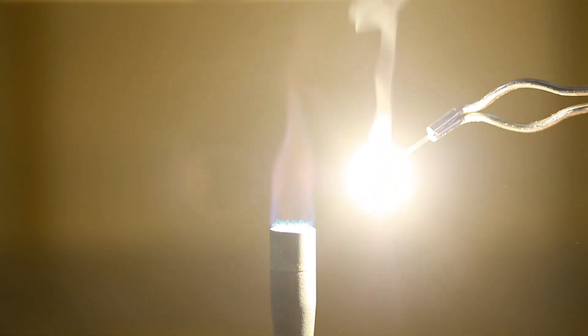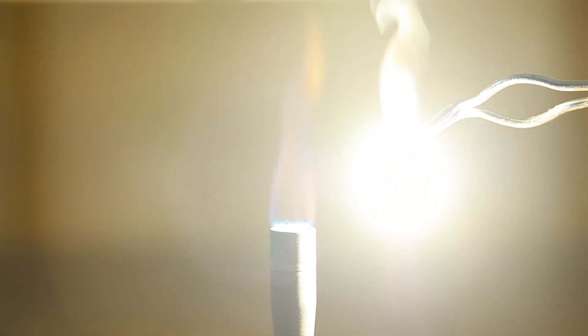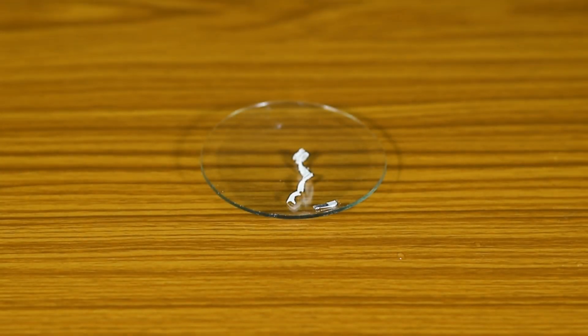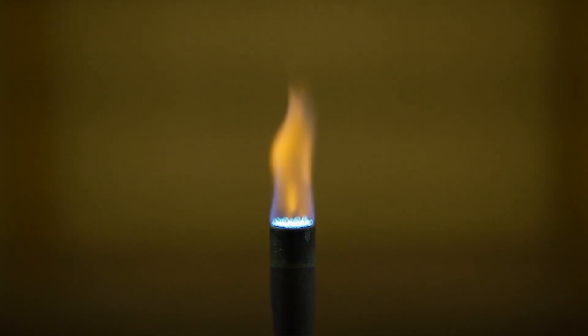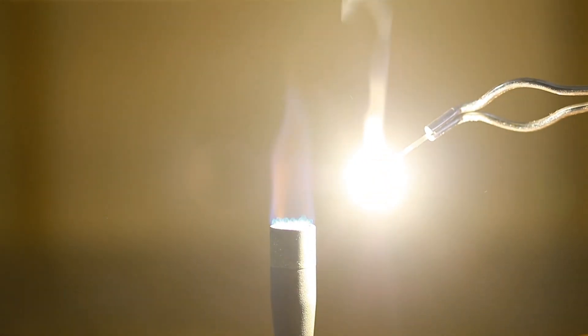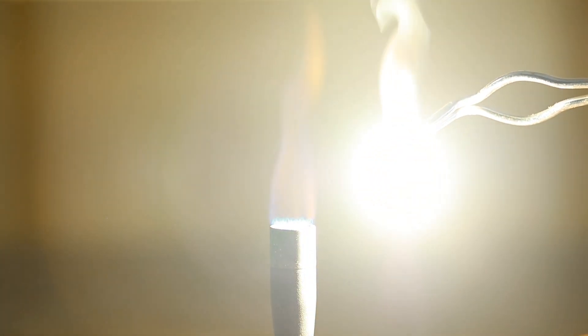What do we observe? We see that the magnesium ribbon burns with a dazzling white flame and changes into a white powder. When magnesium ribbon is burned in the air, it reacts with oxygen to produce white magnesium oxide (MgO), which emits heat and light.